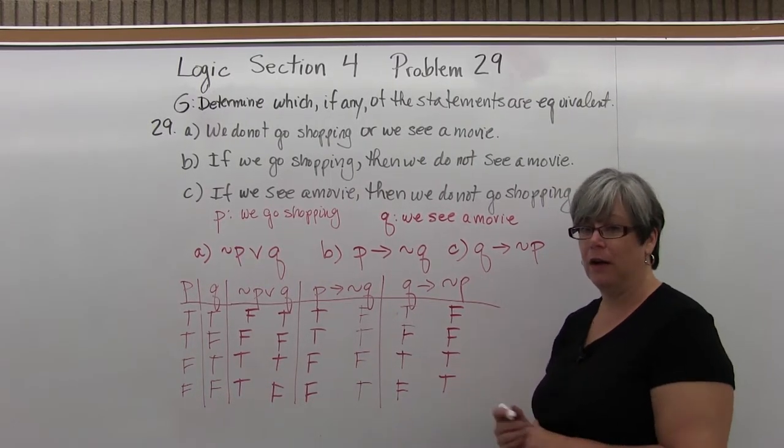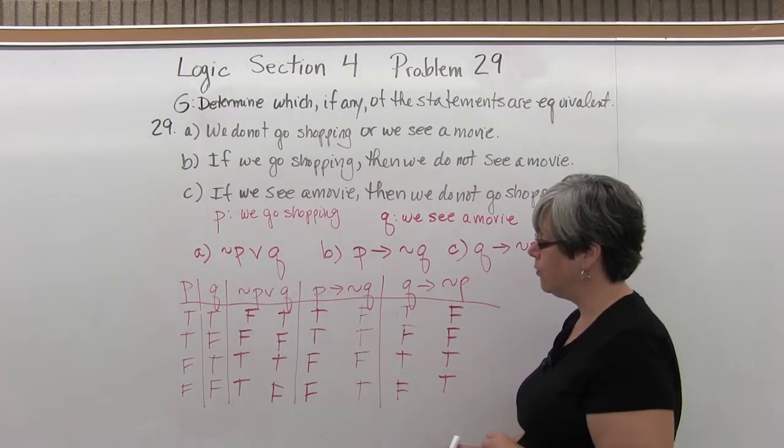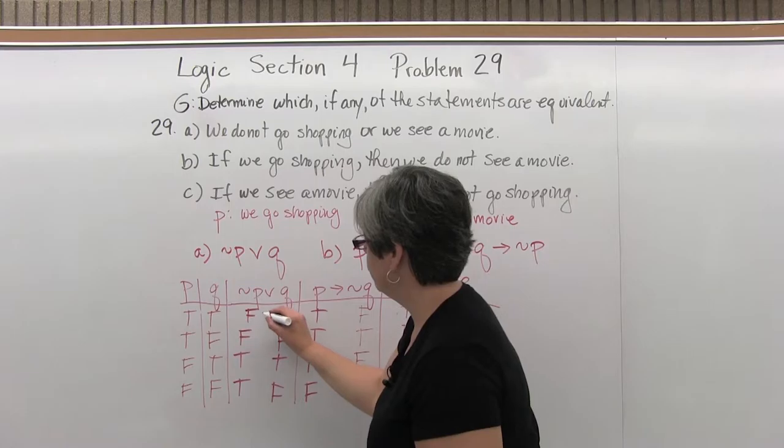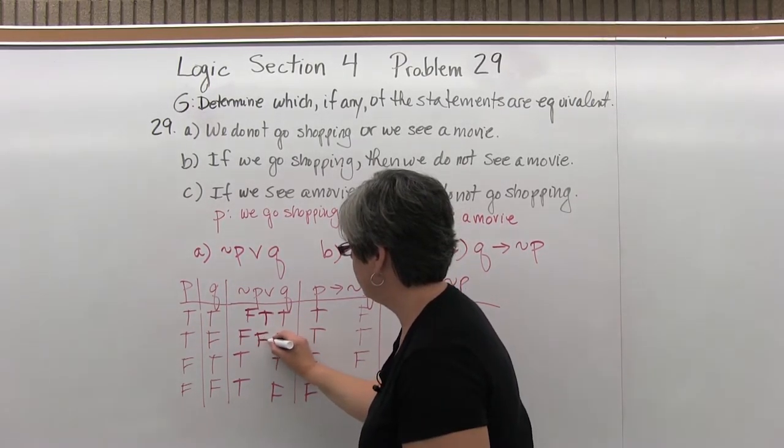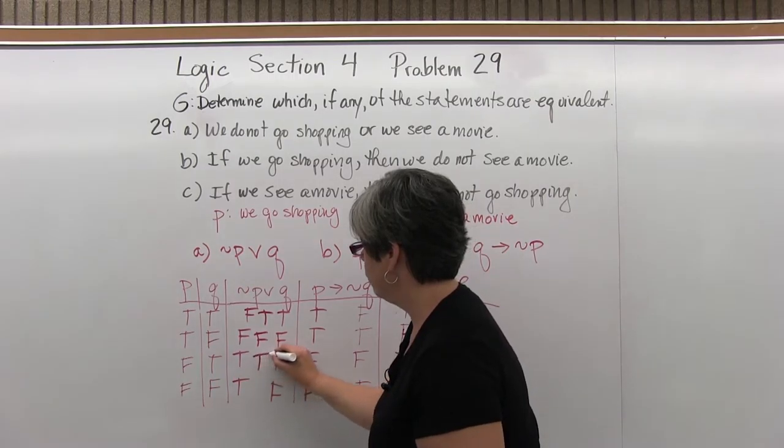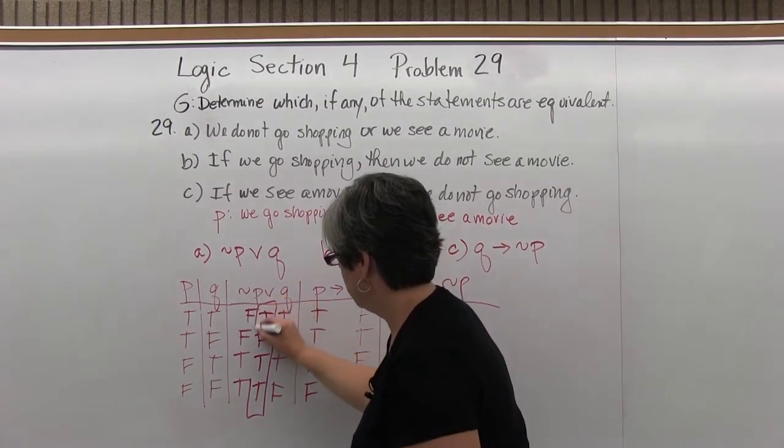Now we got all those. It's time to do our logical connectives. For the or, we remember that they have to be one true or the other true or both. So false or true is true, false or false is false, true or true is true, true or false is true. Okay, one down.